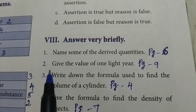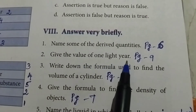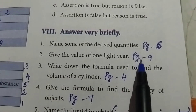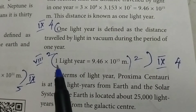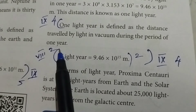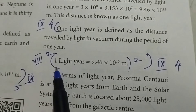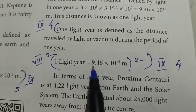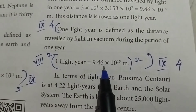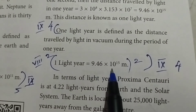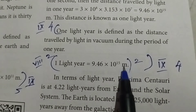Second one: Give the value of one light year. Take page number 9. One light year is equal to 9.46 into 10 to the power of 15 metres.